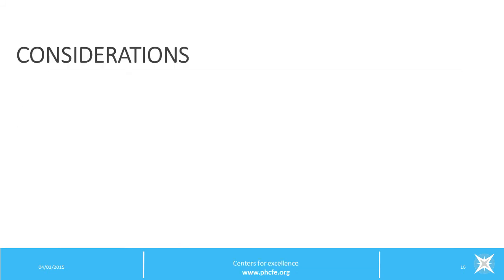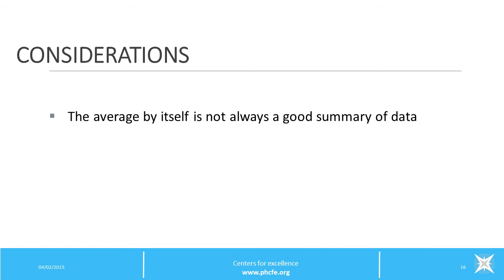There are some important considerations when using a run chart. The average by itself is not always the best summary of data. Measures of data center include the mean, calculated by adding up the total data values and dividing by the number of observations; the median, which is the middle value where half the data lies above and half below; and the mode, which is the most frequently occurring value in the data set.